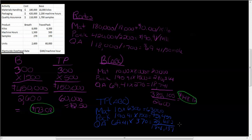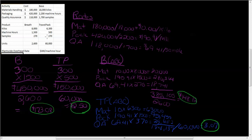Dividing $184,137 by 60,000 units equals $3.07 per unit. Compare that to $2.50 under traditional costing — a significant increase. This makes sense because Travel Pack has nearly a 50-50 split and actually a higher sample count than Breath. Using just one number like machine hours was really skewing our results. Activity-based costing gives a more accurate representation of the resources actually being used.